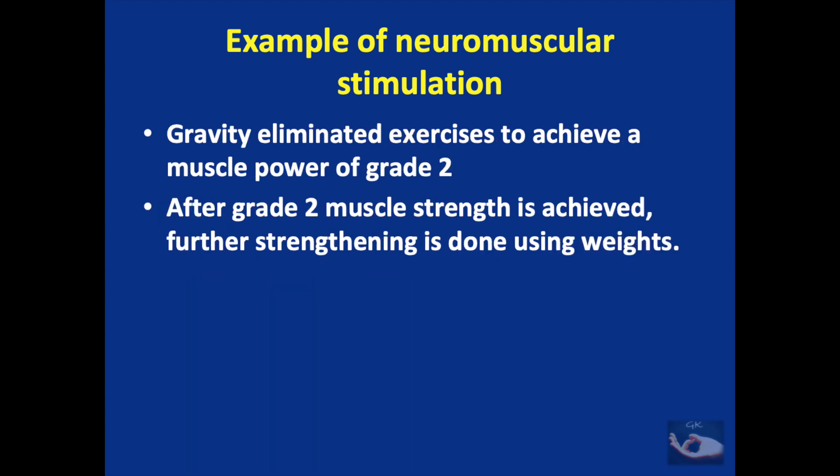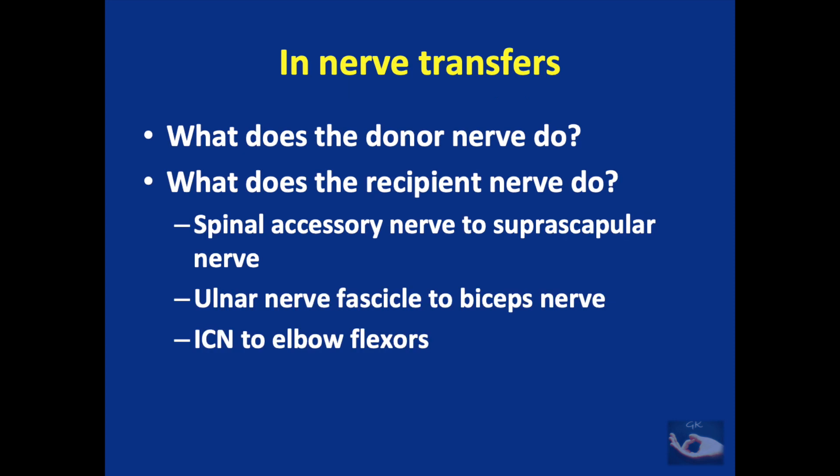Gravity-eliminated exercises are given to achieve muscle power of grade 2. After grade 2 is achieved, further strengthening is done using weights. After nerve transfers, we need to consider what the donor nerve does and what the recipient nerve does. We shall consider this for three important nerve transfers: the spinal accessory nerve transfer to the suprascapular nerve, the ulnar nerve fascicle to the biceps nerve, and the intercostal nerves to the elbow flexors.